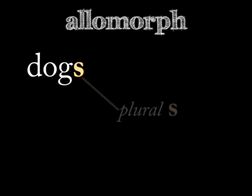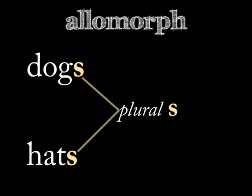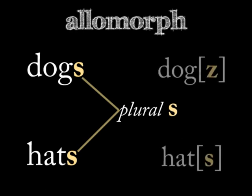You can see that it makes the word plural. If we add that same plural 's' to another word, we sometimes see that it shows up differently. For example, in the word 'hats', it shows up as an 's' sound and not as a 'z' sound. So the 'z' sound and the 's' sound are two allomorphs of a single plural 's' morpheme.